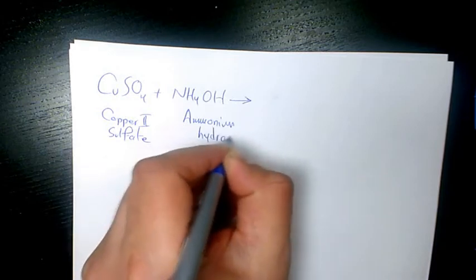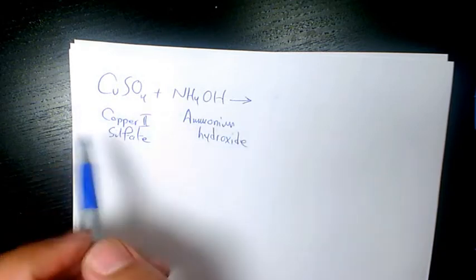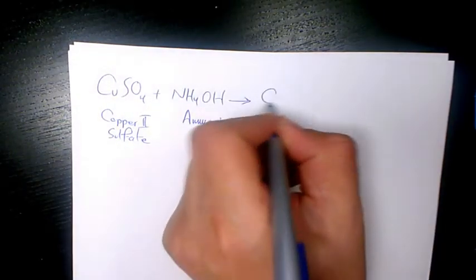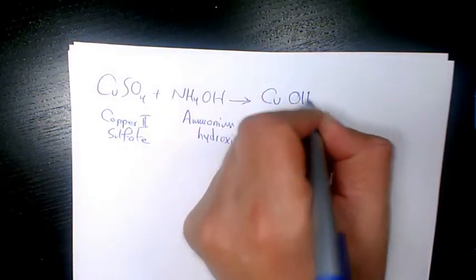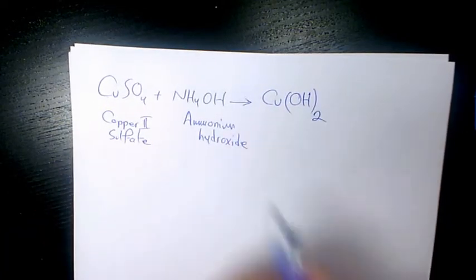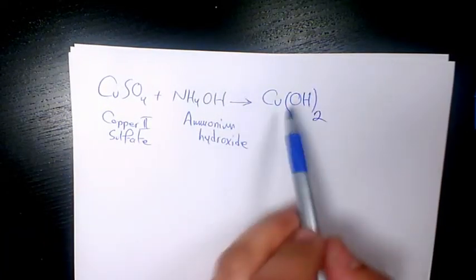So the reaction is going to be double displacement. So Cu is going to react with hydroxide. You have Cu(OH)2 since the charge here is 2, you can have 2 in here, and OH is negative 1 so we don't write anything here.